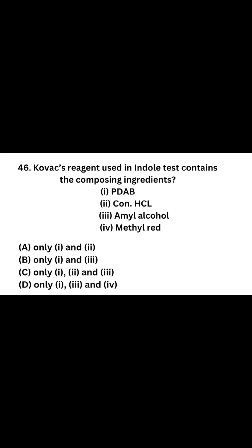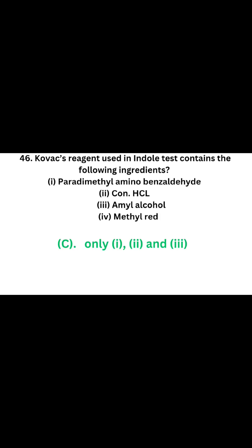Question number 46. Kovac's reagent used in indole test contains the following ingredients: 1. Paradimethylaminobenzaldehyde (PDAB), 2. Concentrated HCl, 3. Amyl alcohol, 4. Methyl red. Which of the following ingredients are present in Kovac's reagent? The correct answer is Option C — only 1, 2 and 3: Paradimethylaminobenzaldehyde, Concentrated HCl, and Amyl alcohol.